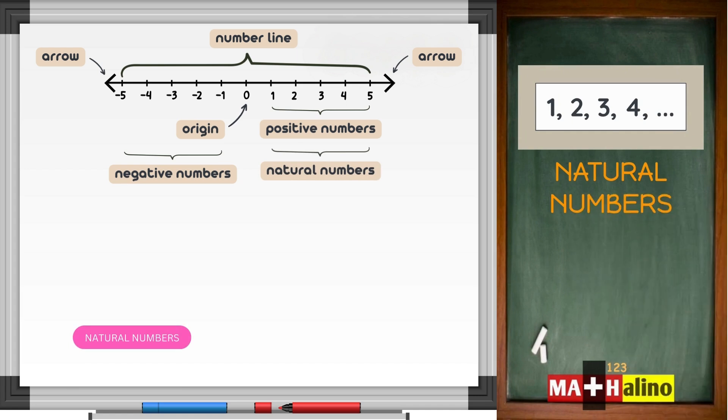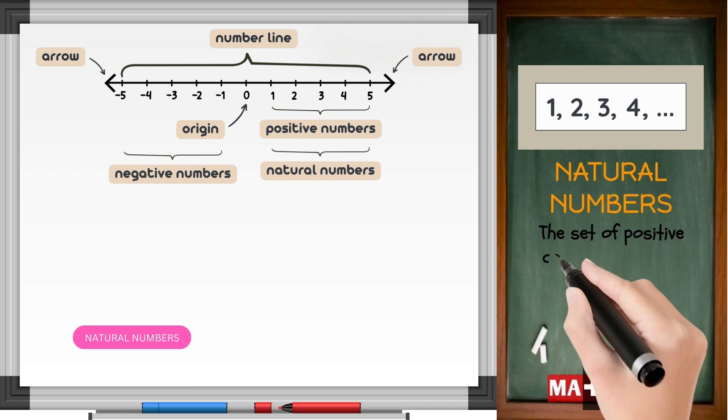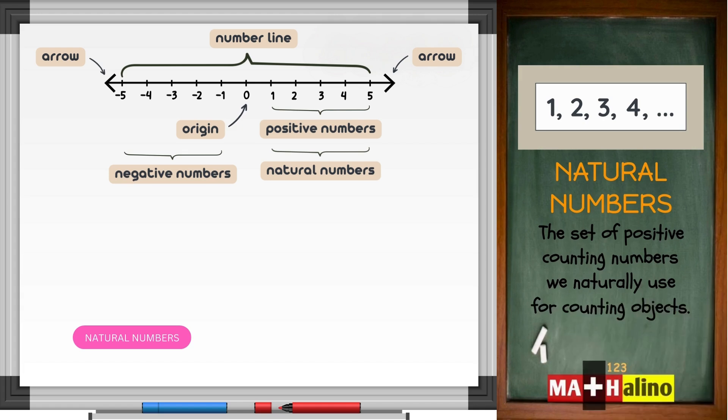Natural numbers. The set of positive counting numbers we naturally use for counting objects.